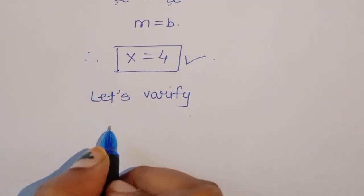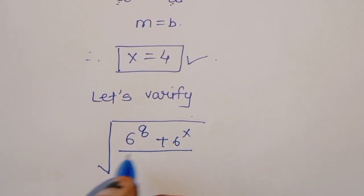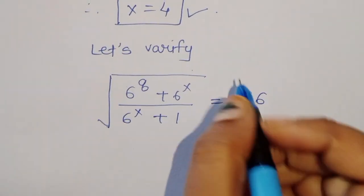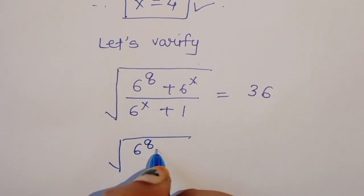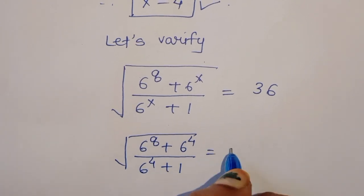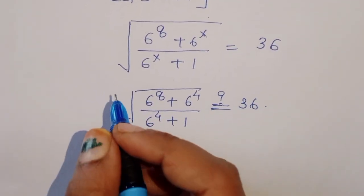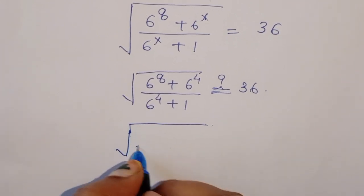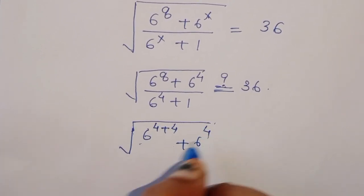Now let's verify. The question is: 6 raised to 8 plus 6 raised to x, divided by 6 raised to x plus 1, equals 36. Substituting x equals 4: 6 raised to 8 plus 6 raised to 4, divided by 6 raised to 4 plus 1. We can write 6 raised to 8 as 6 raised to 4 plus 4.